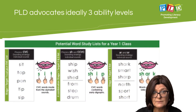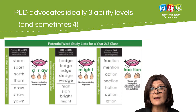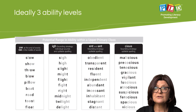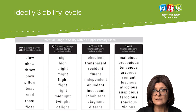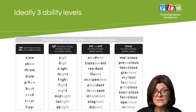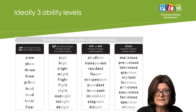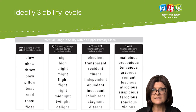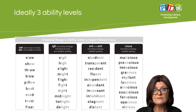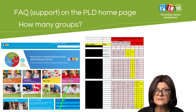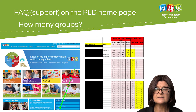PLD advocates ideally three ability levels within junior primary classes, but in middle and upper primary classes this may move to four levels. Typically PLD will encourage you to establish three ability groups, which may involve combination groups — for example, a combined Stage 3 and 4 group and a high-level group — rather than thinking of each stage as a separate group. The support site's guidance on how many groups can provide further direction.